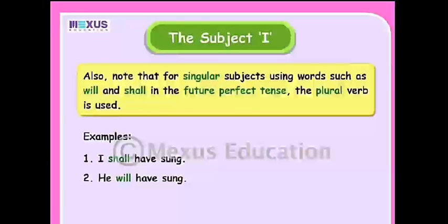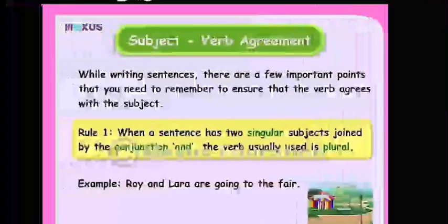Also note that for a singular subject using words such as 'will' and 'shall' in the future perfect tense, the plural verb is used. For example: 'I shall have sung,' 'We will have sung.'